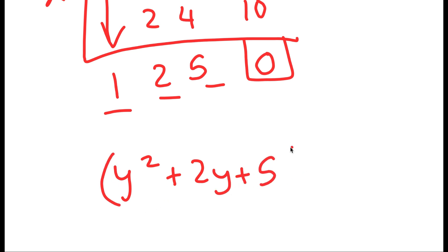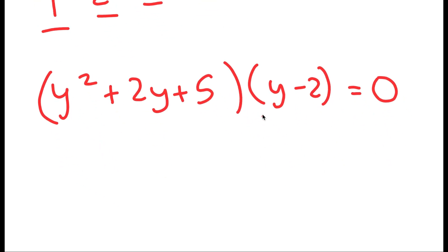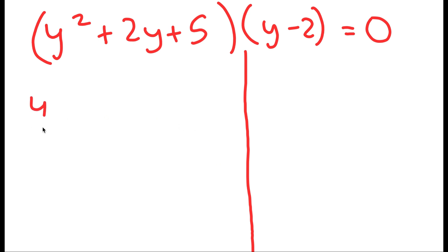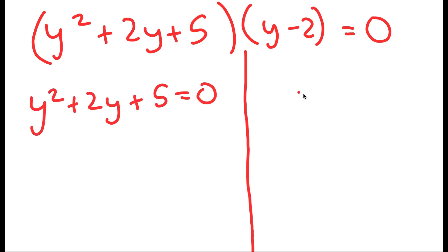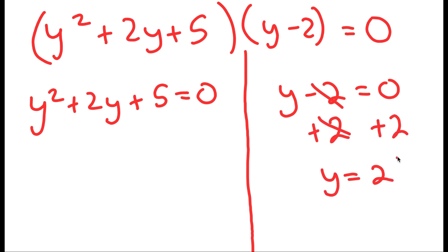Meaning y squared plus 2y plus 5 times y minus 2 is equal to 0. So this is my equation, and I'm going to divide this into two equations: y squared plus 2y plus 5 equals 0, and y minus 2 equals 0. For y minus 2 equals 0, I'm going to add 2 on both sides, so I get y is equal to 2.